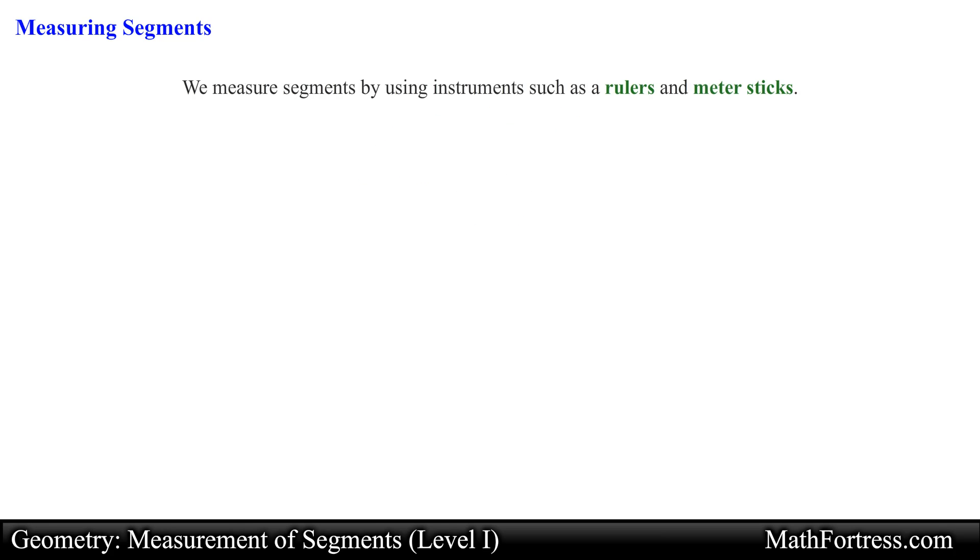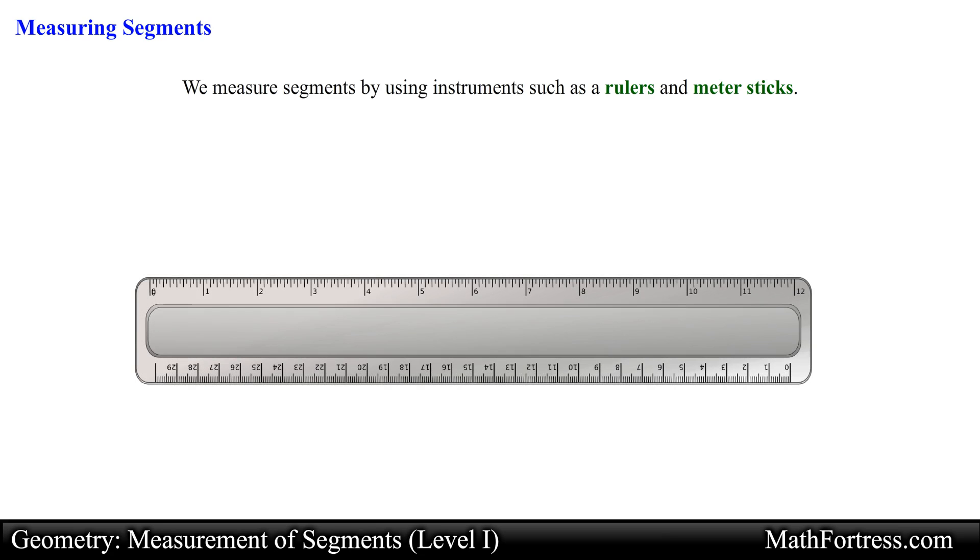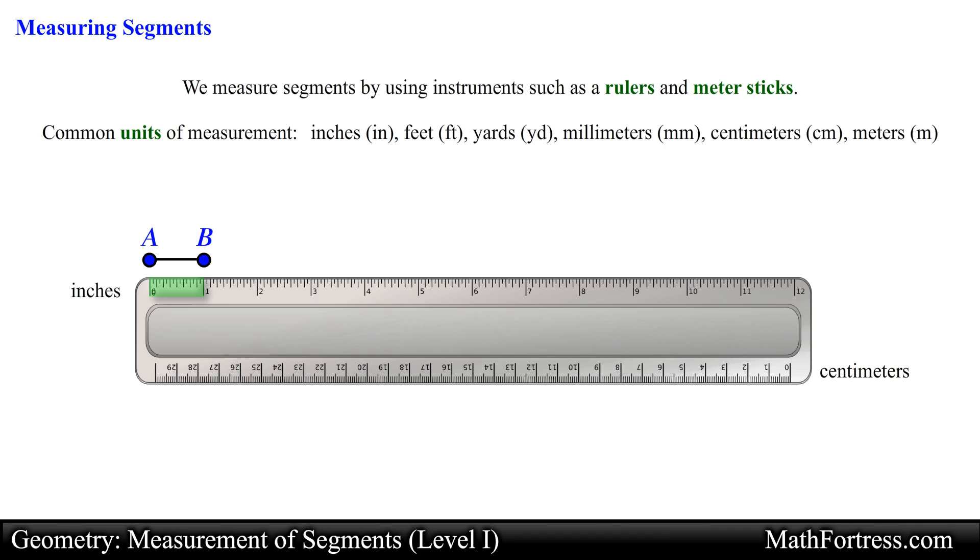We measure segments by using instruments such as rulers and meter sticks. We may use any convenient length as a unit of measure. Common units include inches, feet, yards, millimeters, centimeters, and meters. For example, segment AB measures 1 inch and segment CD measures 5 centimeters.